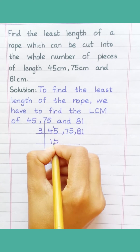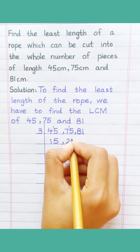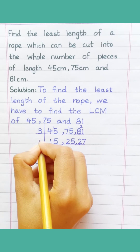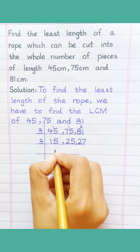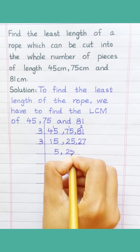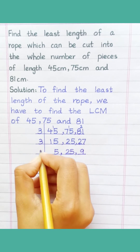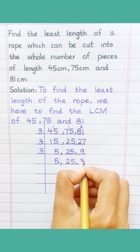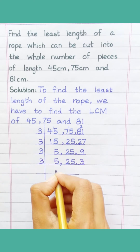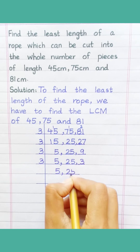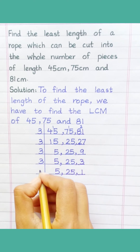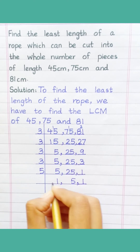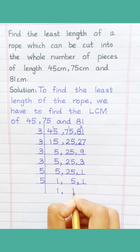Three ones are three, three fives are fifteen, three twos are six, three fives are fifteen, three twos are six, three sevens are twenty-one, three fives are fifteen, three nines are twenty-seven, three threes are nine, three ones are three, five ones are five, five fives are twenty-five, five ones are five.